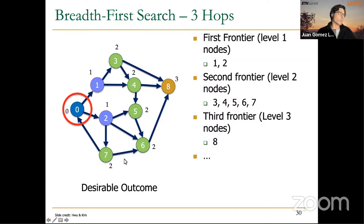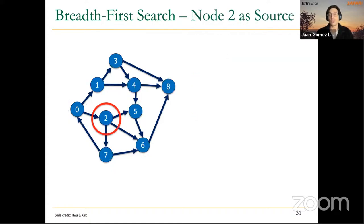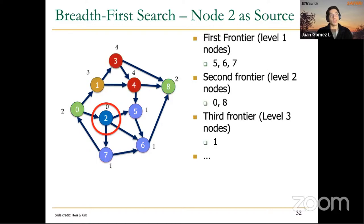The outcome of the BFS algorithm depends on both the graph and the node used as the source. For example, if the source is node 2 instead of node 0, the output is completely different — we visit different nodes in the first, second, and third frontiers. In this case, we actually have four frontiers because the last two nodes visited are nodes 3 and 4.